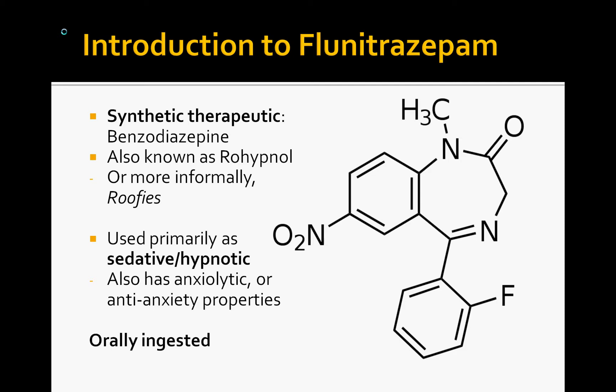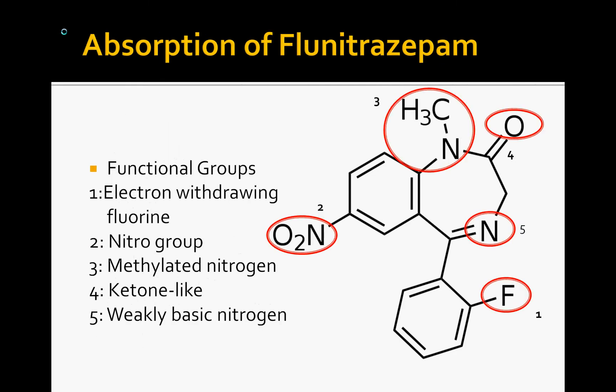It's also orally ingested. These are the main functional groups on flunitrazepam. Number one is the electronegative fluorine group. Number two, the nitro group, relatively nonpolar. Number three, the methylated nitrogen, also relatively nonpolar. Number four, what structurally resembles a ketone, other than there being a nitrogen where there should be a carbon — it is relatively polar. And the weakly basic nitrogen is essentially what conveys overall weak basicity to flunitrazepam.